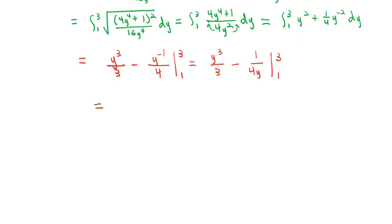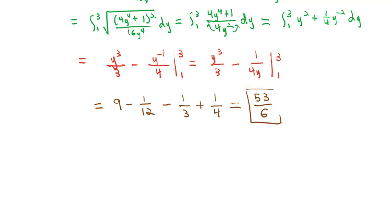Plugging in the limits of integration: 3 cubed is 27, divided by 3 is 9, minus 1 over 4 times 3 is 12. Minus, plugging the 1 in gives us 1/3, plus plugging the 1 in gives us 1/4. Calculating: 9 minus 1/12 minus 1/3 plus 1/4 gives us a total length of 53/6.